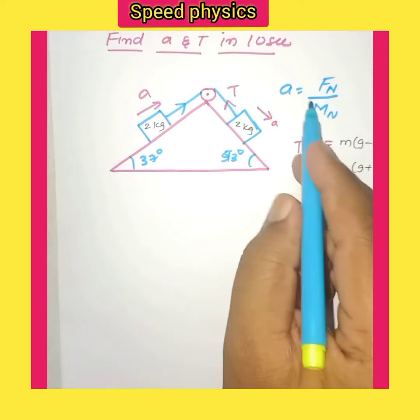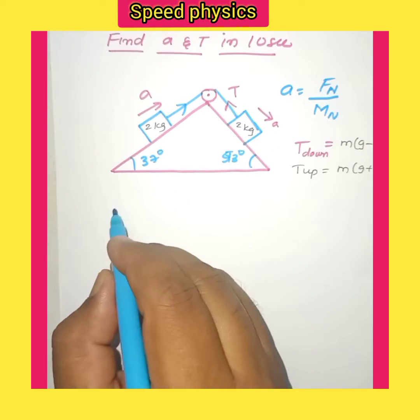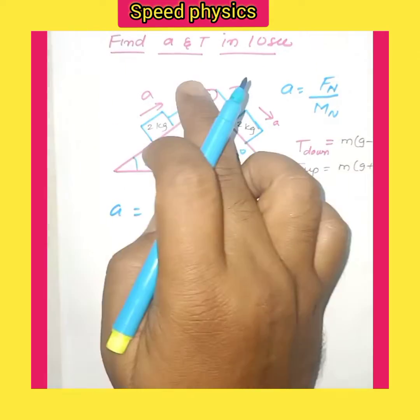Let us solve this problem without using a free body diagram. Acceleration equals unbalanced force divided by net mass. The unbalanced force in this case has one mass coming down and one moving upward.